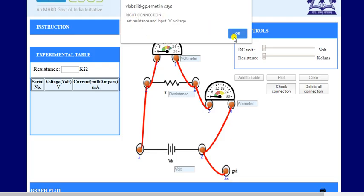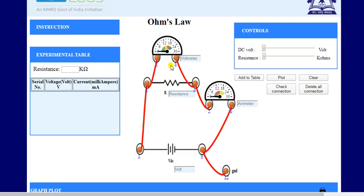It means you have connected all terminals properly. Now first, we have to set the value of voltage by putting a constant value of resistance. Let's suppose the value of resistor R is 30 kilo-ohm.